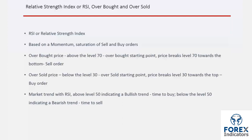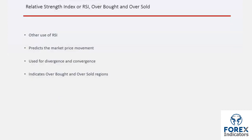When RSI trend is between 70 and 50, market price may have a rising direction and traders can place buy orders. When RSI trend is between 30 and 50, market price may decline and traders can place sell orders.